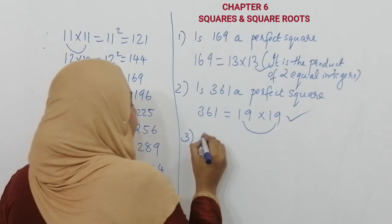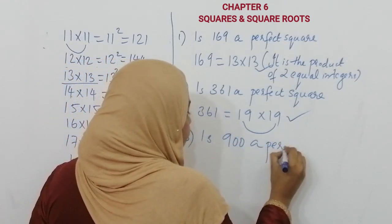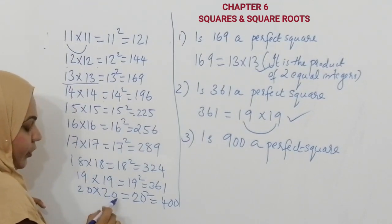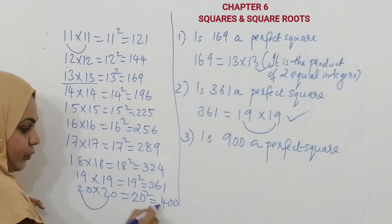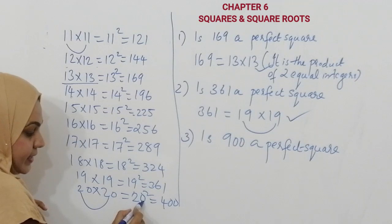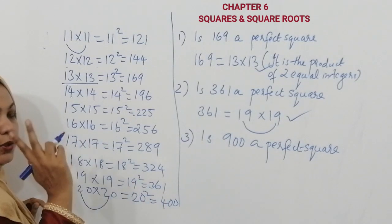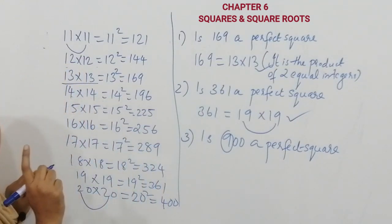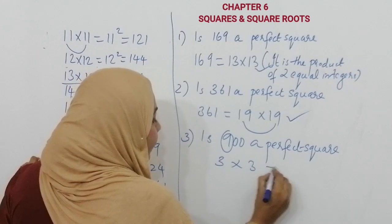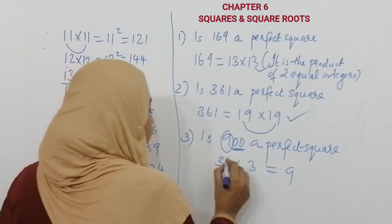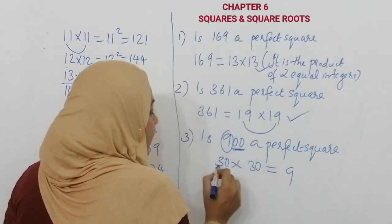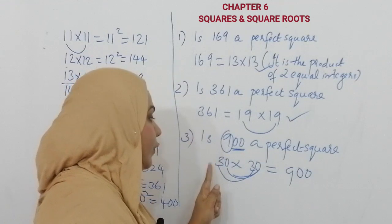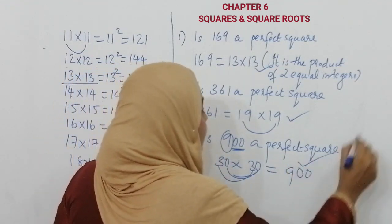One more question: is 900 a perfect square? How can we do 900? Look, 20 into 20, we wrote 20 squared is 400. When you multiply 2 into 2 you get 4, and there is one zero, so square of one zero gives two zeros. Here we have 9 — according to the perfect square definition, the product of two equal integers — 3 threes are 9, and there are two zeros, so 30 into 30. So 900 is the product of two equal integers, 30 into 30. Therefore 900 is also a perfect square.